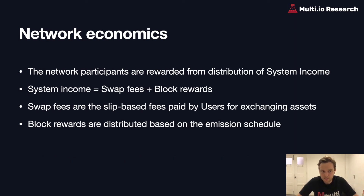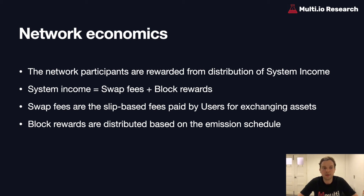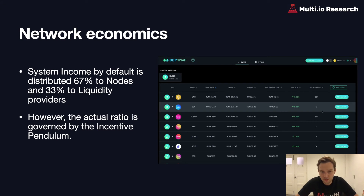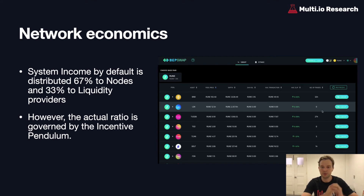The network economics: network participants are rewarded from distribution of the system income, which is made up of swap fees and block rewards. Swap fees are the same slip-based fees paid by users for exchanging assets. Block rewards are distributed based on the emissions schedule from a pre-allocated reserve. By default, the system income is distributed according to a 67/33% ratio that ensures optimal network security. However, the actual ratio is governed by something called the incentive pendulum.